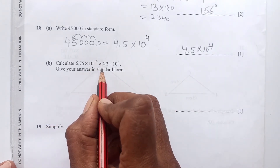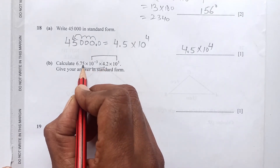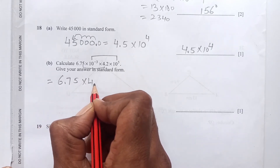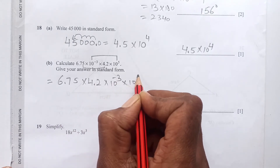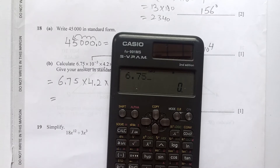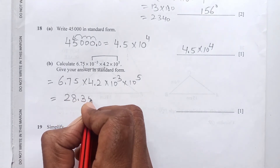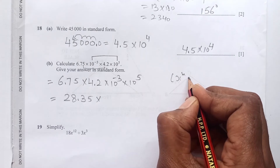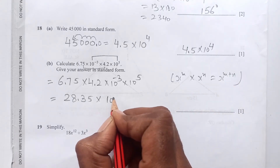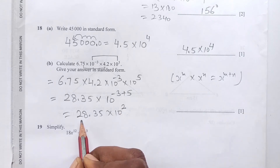Question 18b: calculate 6.75 × 10⁻³ × 4.2 × 10⁵. We combine the decimal parts and the powers of 10 separately. 6.75 × 4.2 = 28.35. For the powers, we use the exponent rule — same base, add the powers: 10⁻³ × 10⁵ = 10². So we get 28.35 × 10².